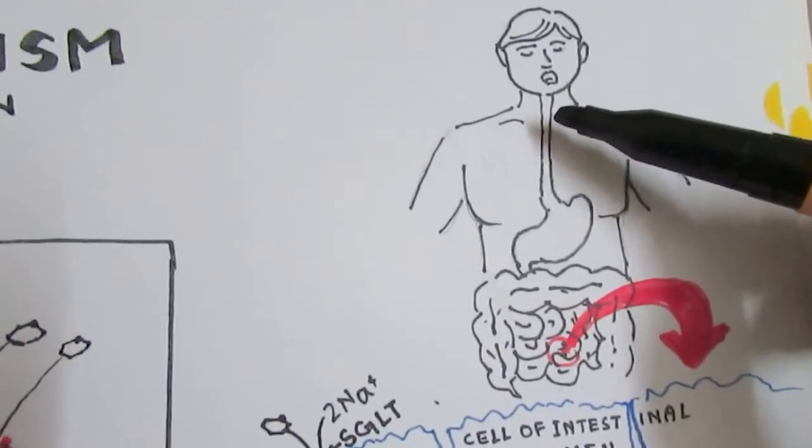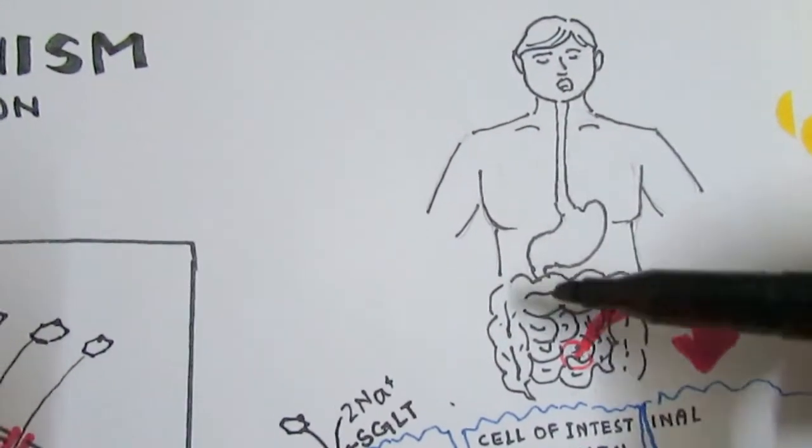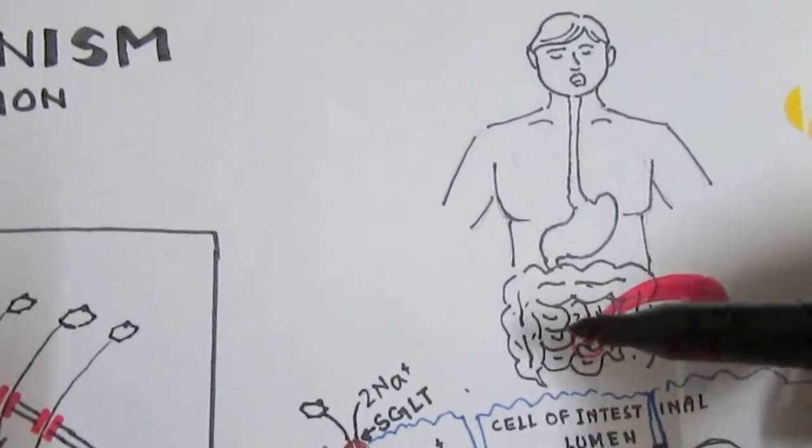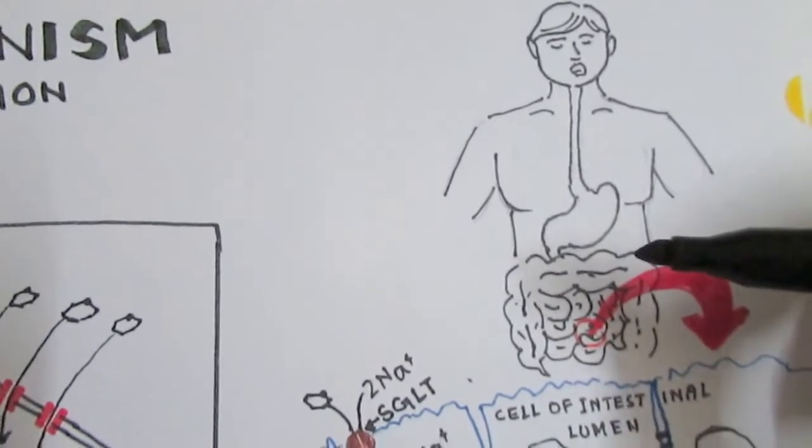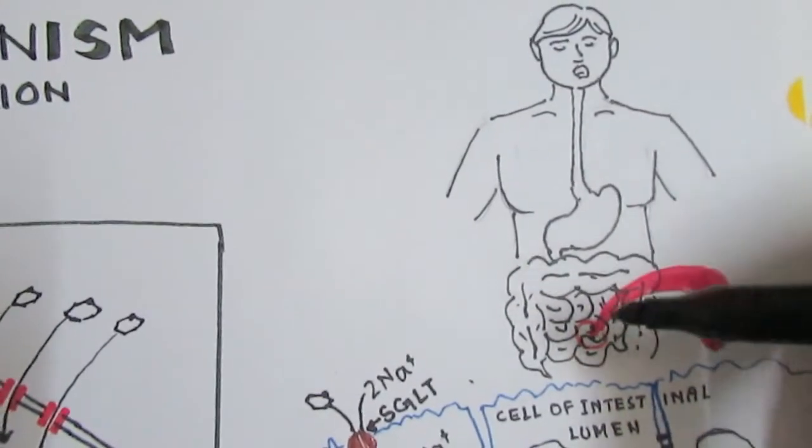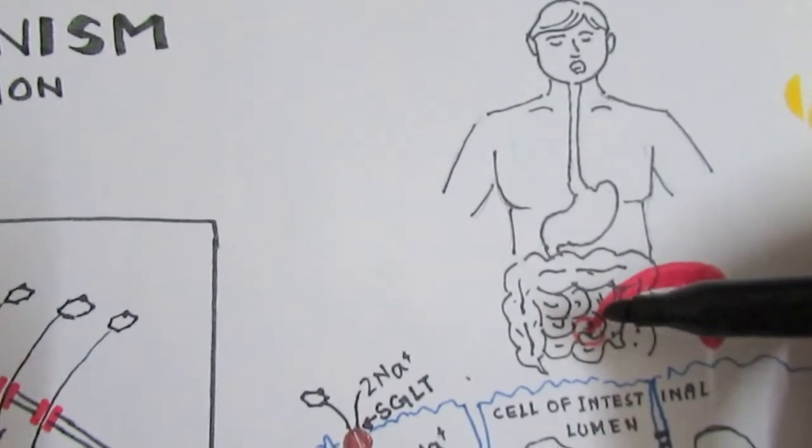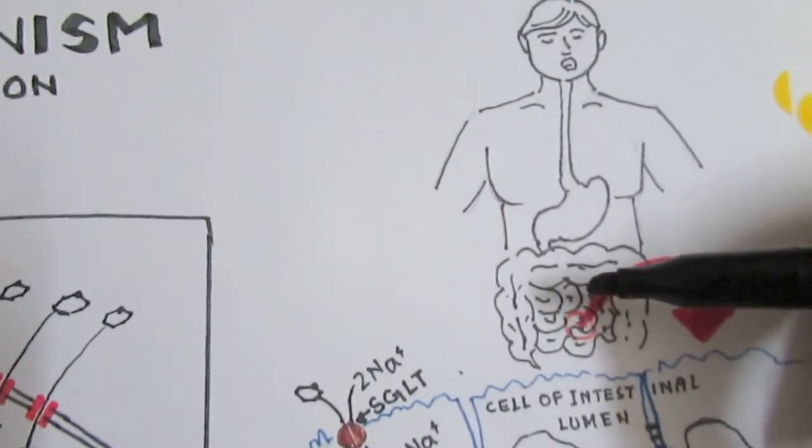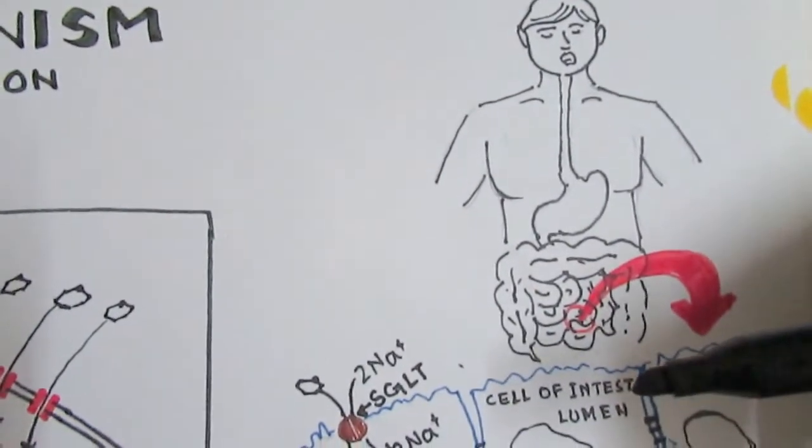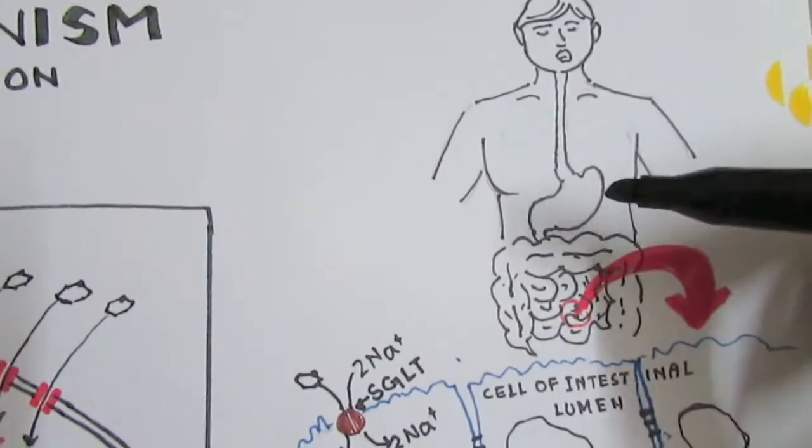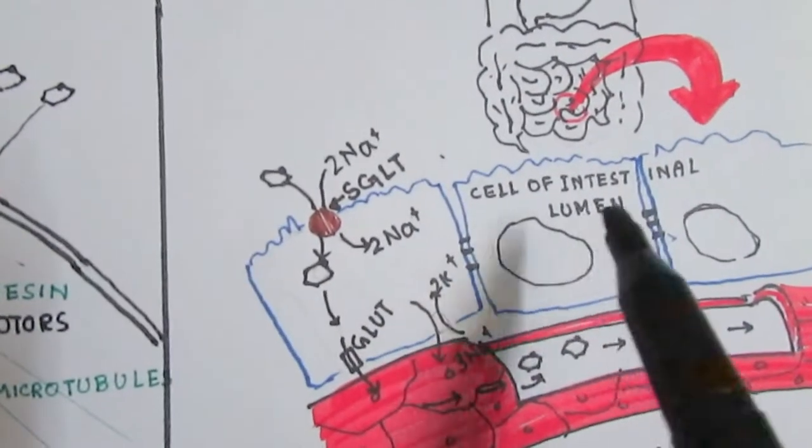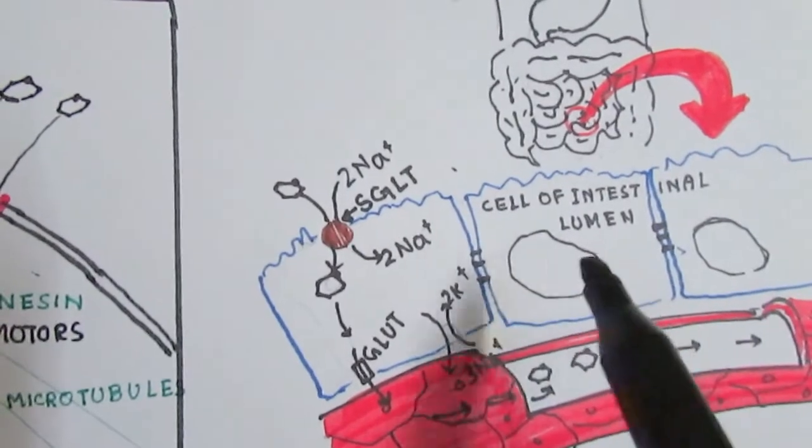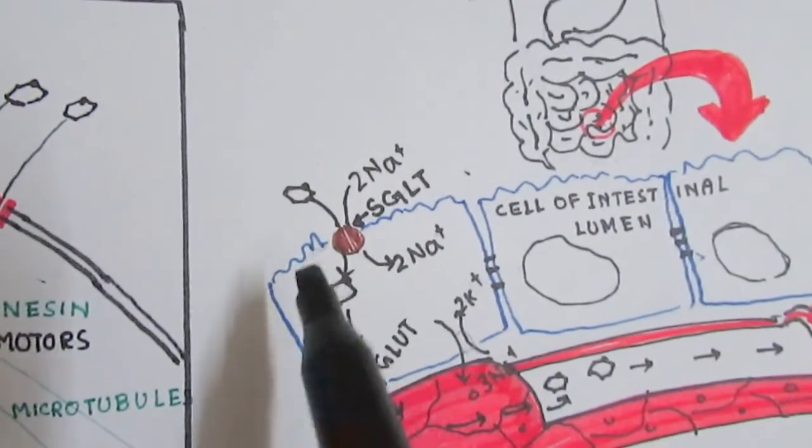When we take food, the food goes into the intestine. Inside the intestine it would be converted into smaller forms, so the starch would be broken down into glucose. Glucose will enter the bloodstream and spread around the body.